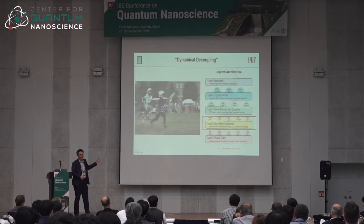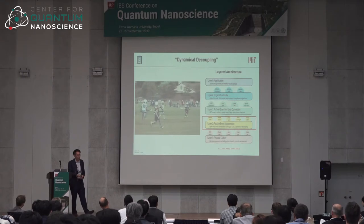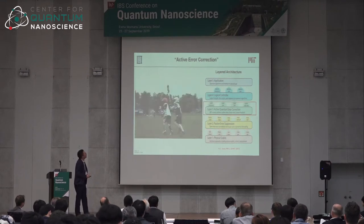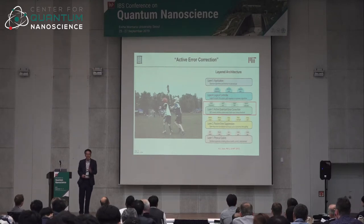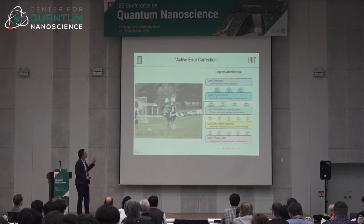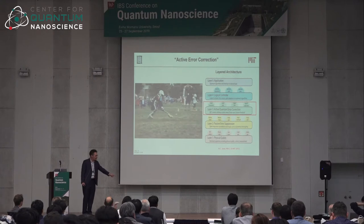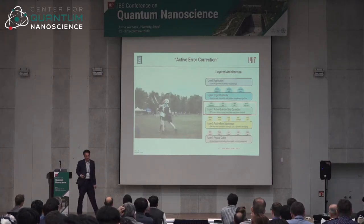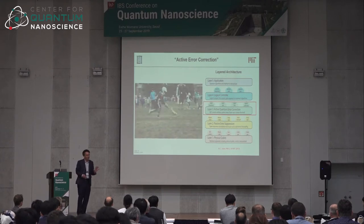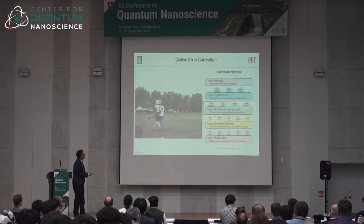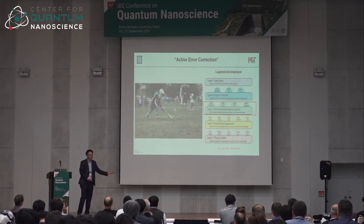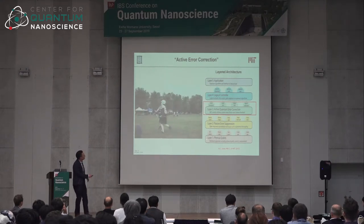Even with passive error suppression, defenders occasionally knock the ball out — you can't always prevent it. When that happens, you must actively recognize the drop, identify where the ball went, and pick it back up. That's active error correction in quantum computers — contemporary research, and very expensive. It therefore behooves us to do everything possible at the passive level to minimize the number of errors that require active correction.